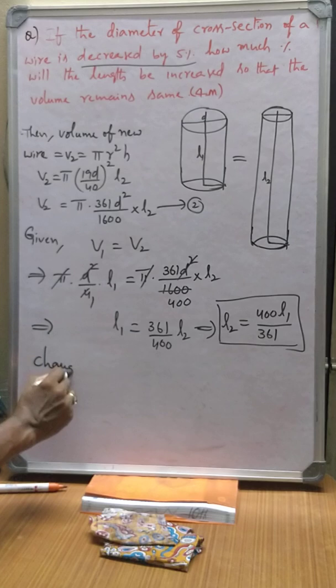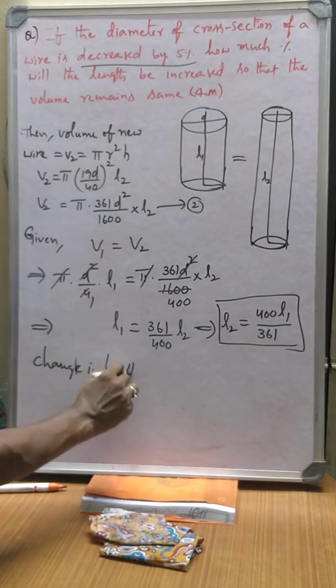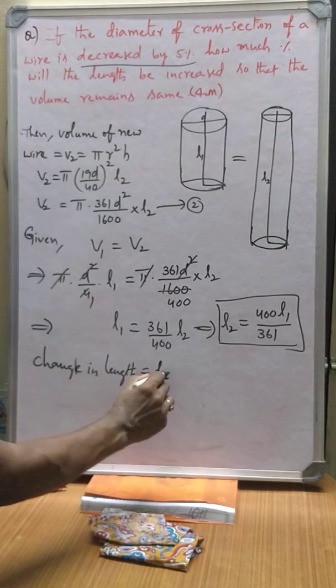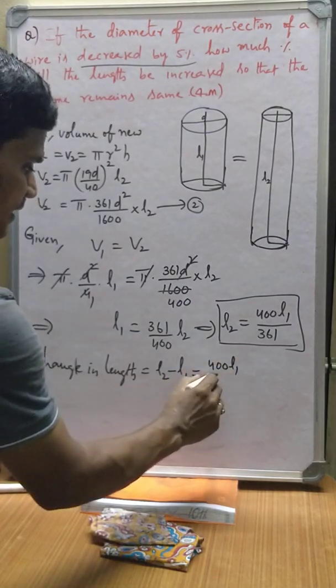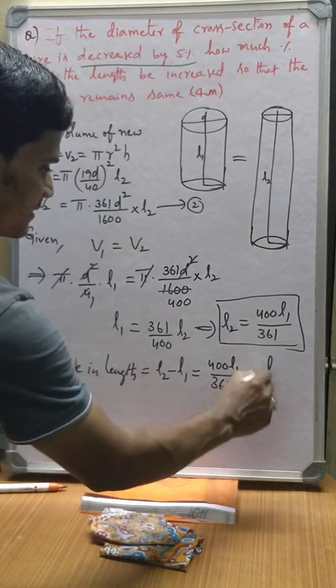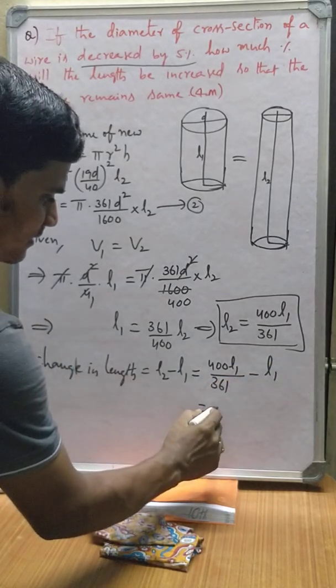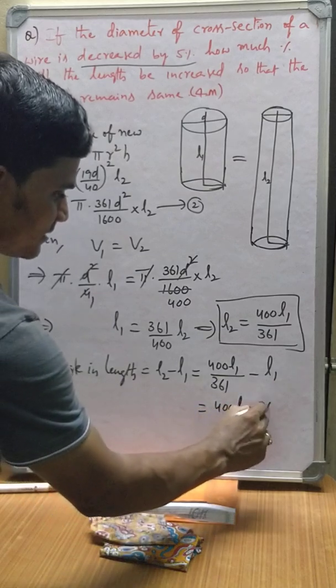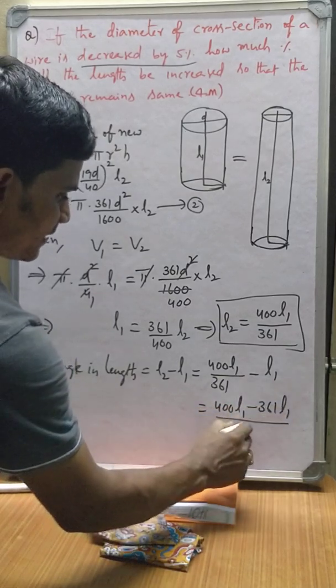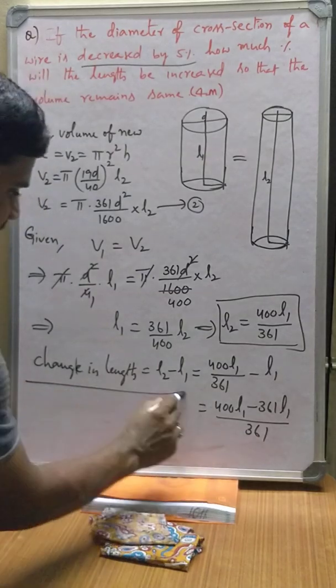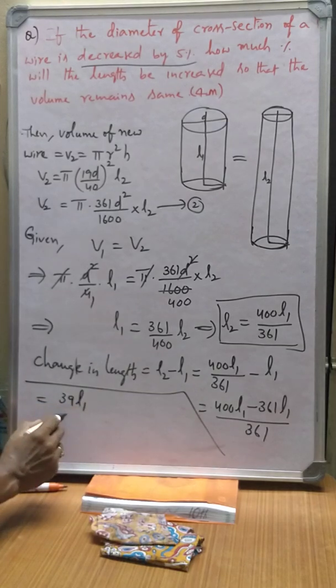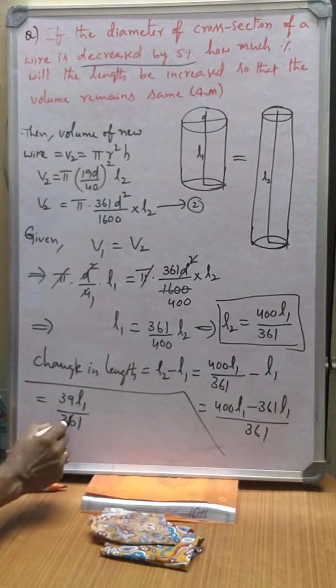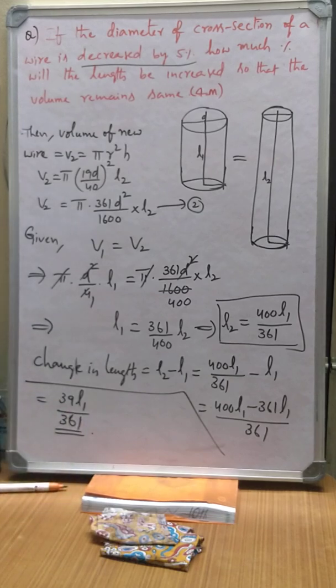Change in length is given by new length minus previous length, that is 400 L1 by 361 minus L1, which again equals to 39 L1 by 361. This is change in length of the wire.